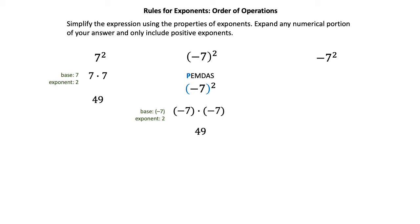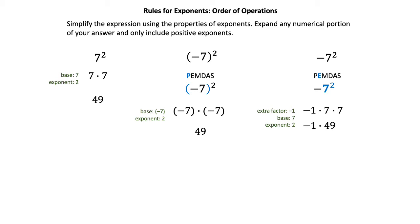In the third example, notice that E (exponent) is second in PEMDAS. With no parentheses, the exponent is very particular about the base. The negative out in front is not contained by parentheses — it is actually an extra factor of negative 1. So we have negative 1 multiplied by a base of 7 raised to an exponent of 2. Written out, that's negative 1 times 7 times 7. The two positive 7s multiply to give 49, but then negative 1 multiplies in, giving a final answer of negative 49.